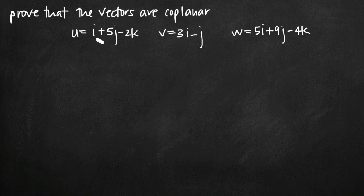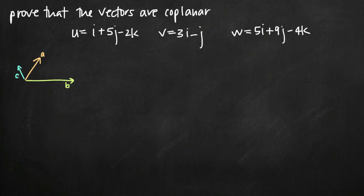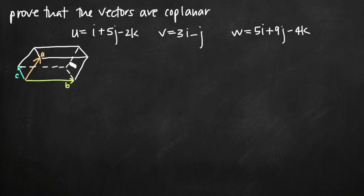If we have three vectors a, b, and c that are not coplanar, and we fill in the sides of the figure, we get a three-dimensional figure called a parallelepiped — basically the three-dimensional version of a parallelogram. The scalar triple product calculates the volume of this figure when the three vectors a, b, and c are adjacent and meet at a corner point.